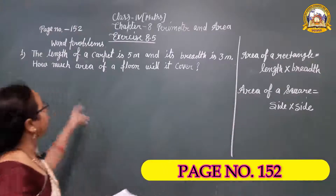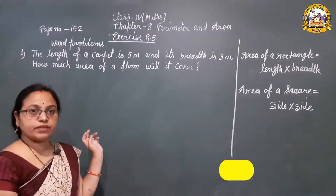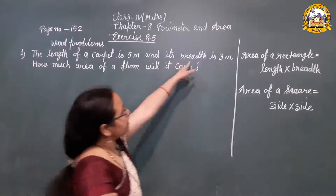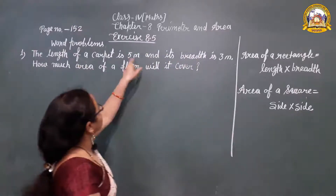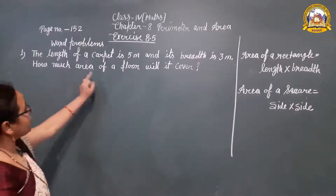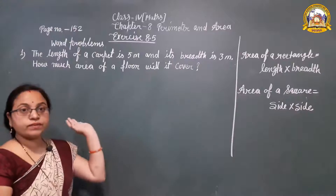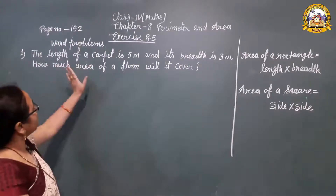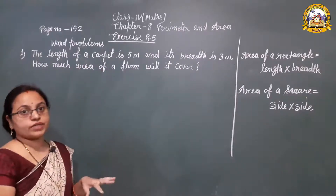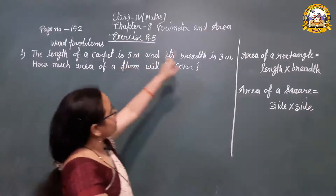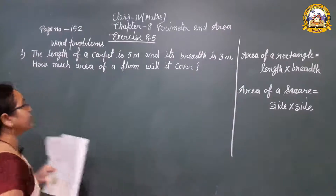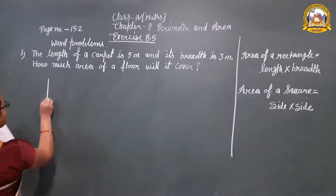First question: the length of a carpet is 5 meters and its breadth is 3 meters. We have to find how much area of a floor it will cover. First, we need to identify the shape of the carpet. Since the length and breadth are both given and different, it is definitely a rectangle shape.